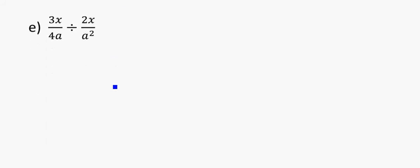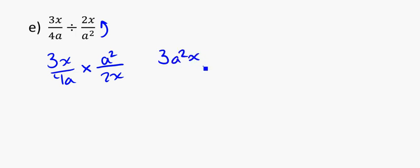Looking at another example, rewriting the first one out, 3x over 4a times in by the flip of the second one. So a squared, flipping to the top, and 2x on bottom. So 3x times a squared, well, we can't combine the powers on the x and the a, so we just write them side by side. 3a squared x over 4 times 2 becomes 8ax.